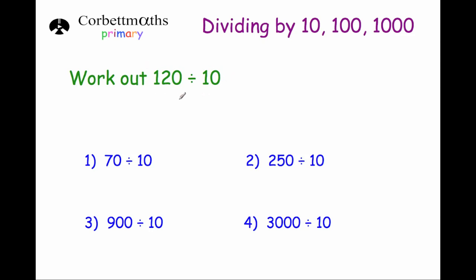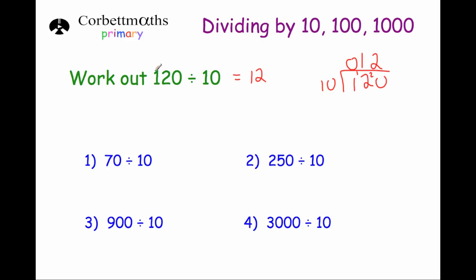Let's start off by dividing 120 by 10. I'm going to use the bus shelter method to begin with, and then we'll get a shortcut. 10 into 1 is 0 remainder 1. 10 into 12 goes once remainder 2. And 10 into 20 goes twice. So if we divide 120 by 10, we get an answer of 12. The 100 digit gets 10 times smaller so it becomes 10, and the 20 gets 10 times smaller and it becomes 2.